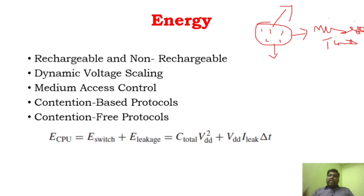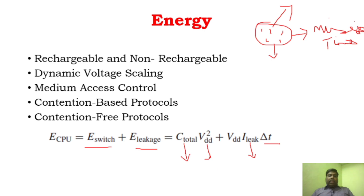Regarding energy in CMOS processes, it depends upon switching energy and leakage energy. C_total is the total capacitance, VDD is the supply voltage, I_leak is the leakage current, and the time duration refers to the computation period. Predominantly, processor energy is completely dependent on switching energy. In future processes, it will mostly depend on leakage energy.